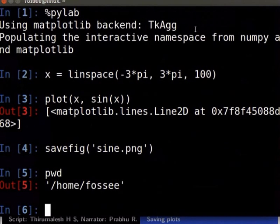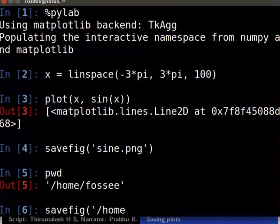To save the file in a different directory, type full path of the directory before the filename. Type savefig('/home/fossee/sine.png').